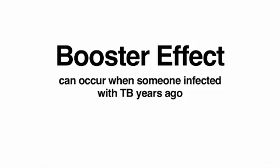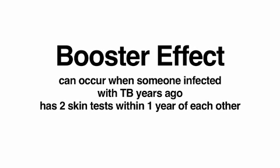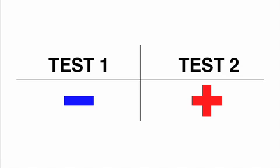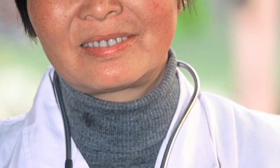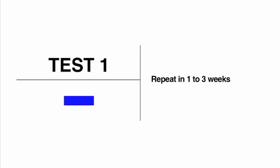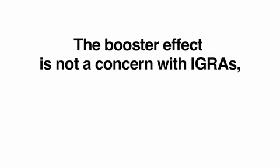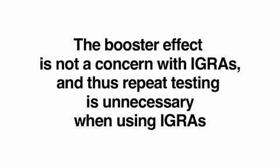The booster effect can occur when someone infected with TB years ago has two skin tests within one year of each other. Even though the first test may have been negative, the second has a positive reaction because the first test boosted the immune response. For this reason, a two-step testing method is recommended for the skin testing of people who will be tested periodically, such as healthcare workers. If the first test result is negative, repeat the skin test in one to three weeks. Consider the person uninfected only if both tests are negative. The booster effect is not a concern with IGRAs, and thus repeat testing is unnecessary when using IGRAs.